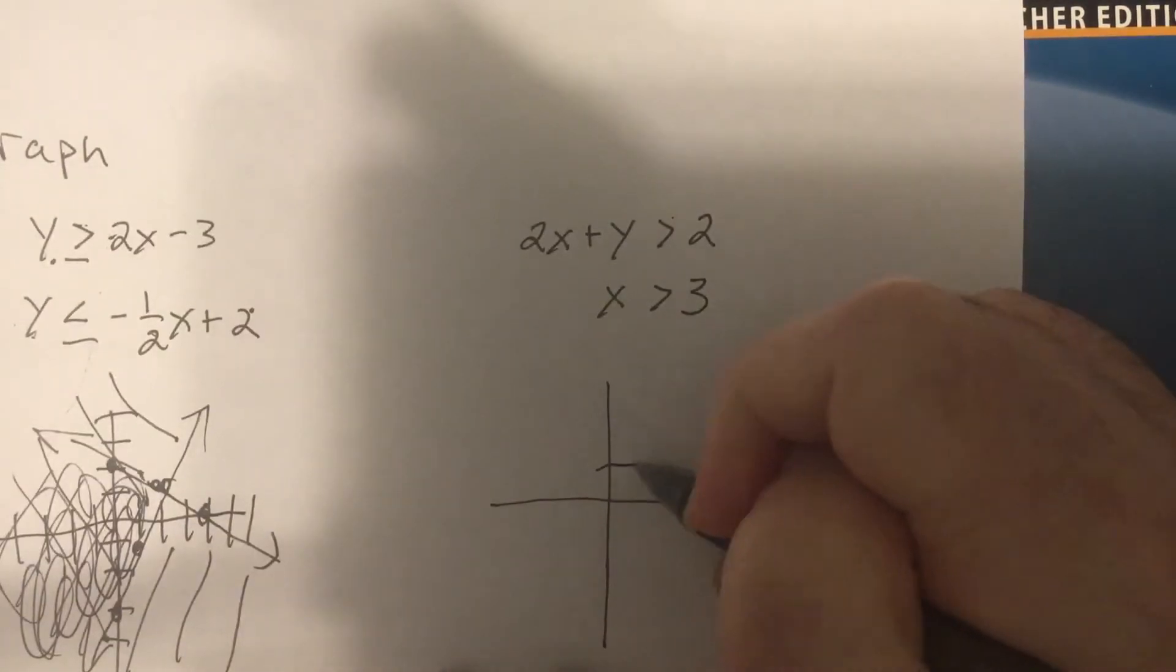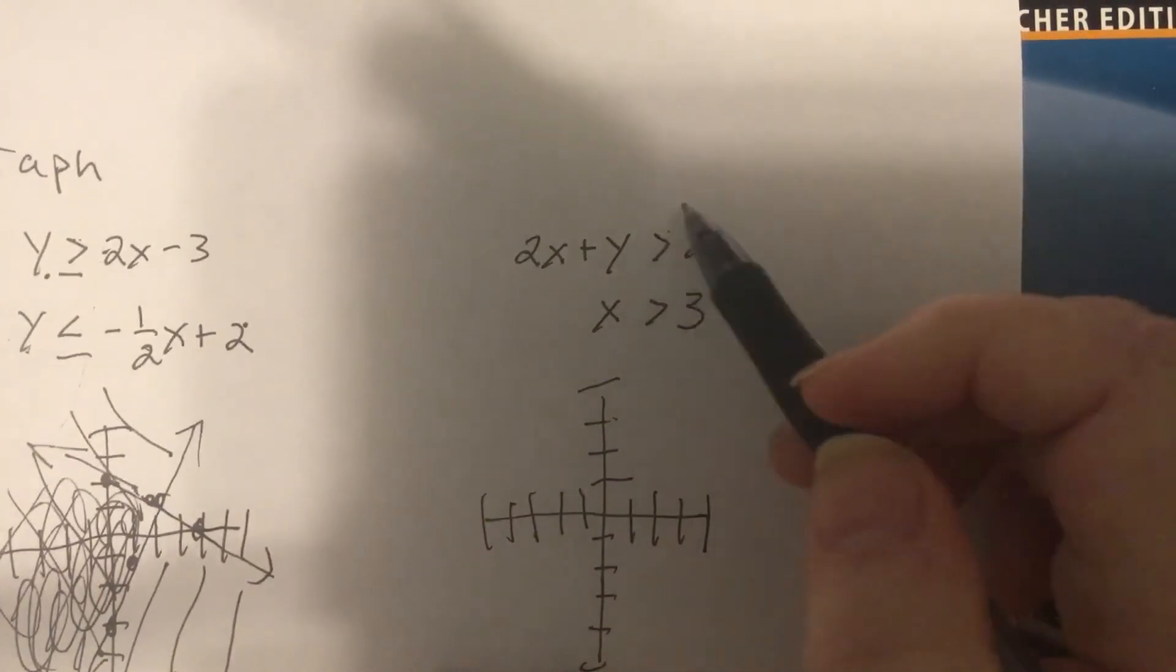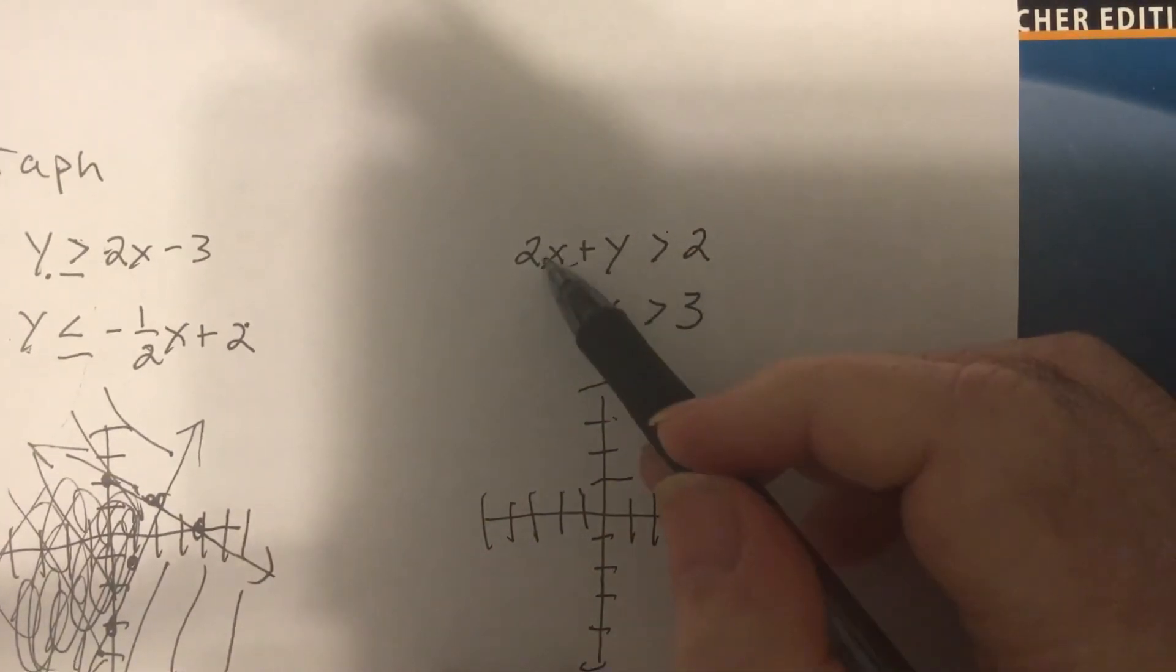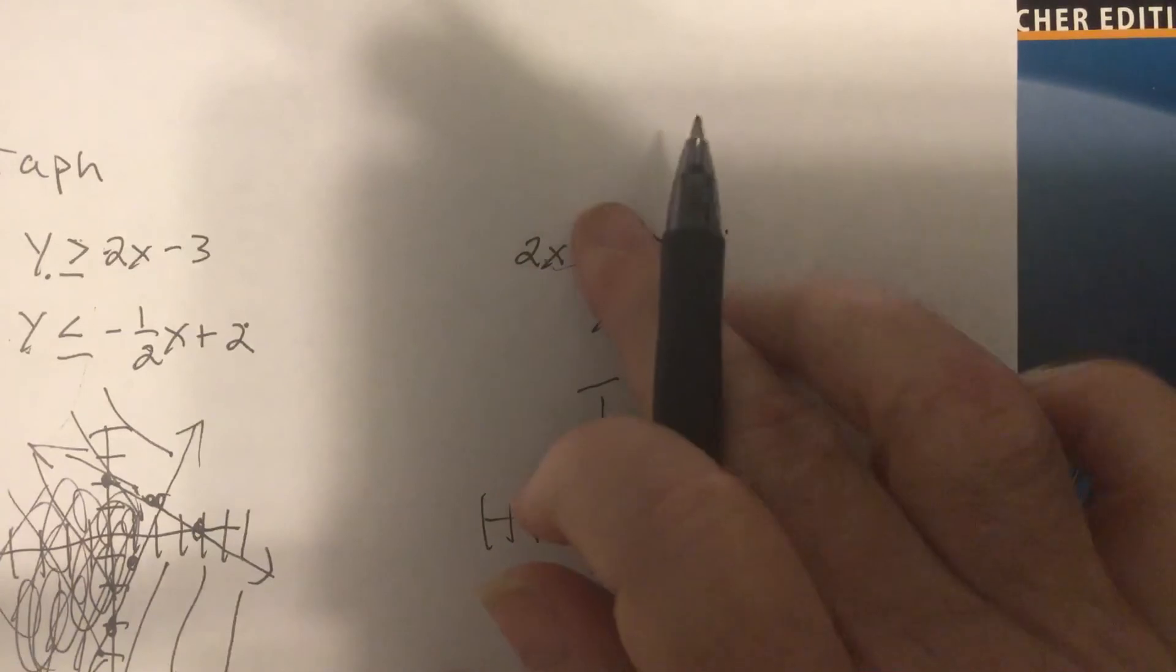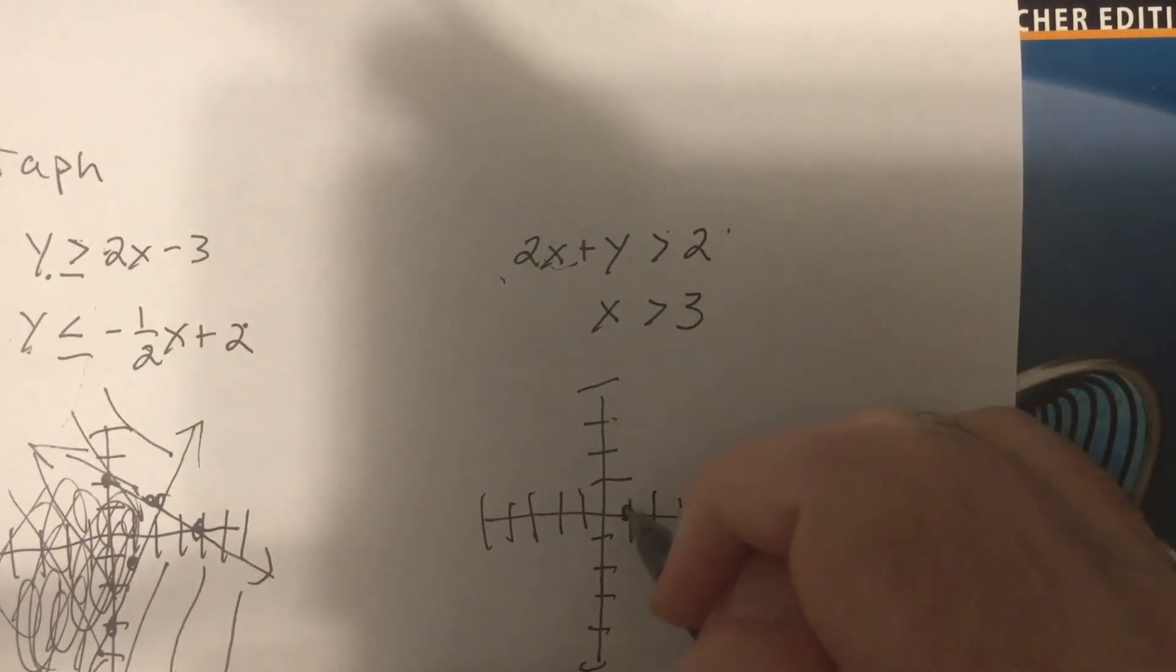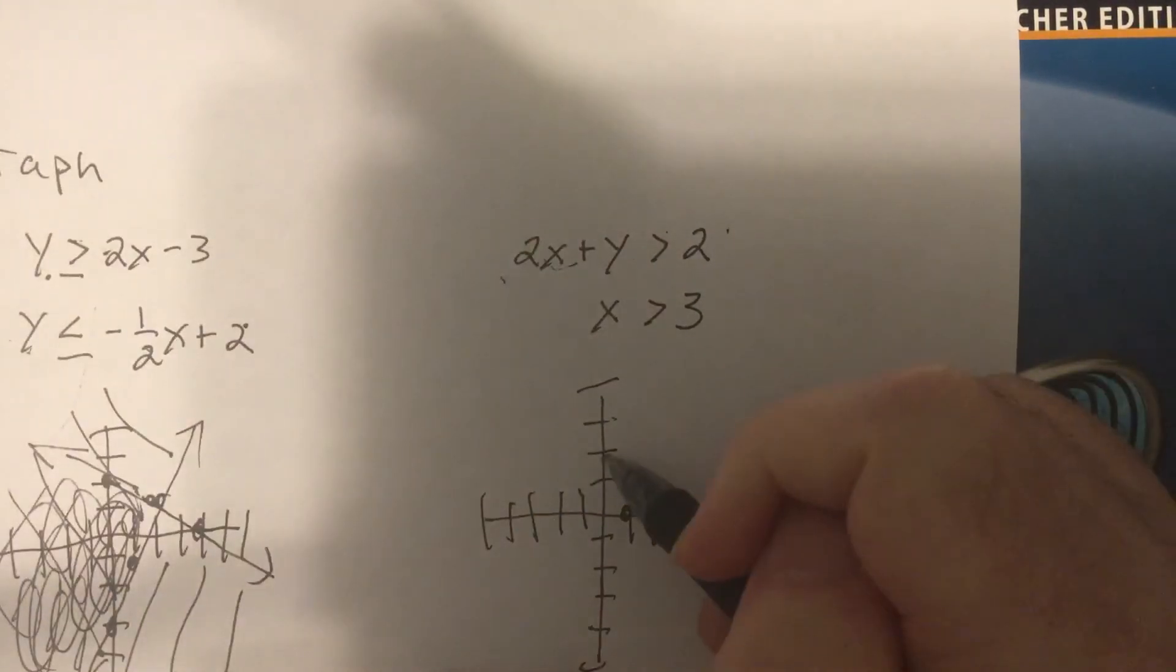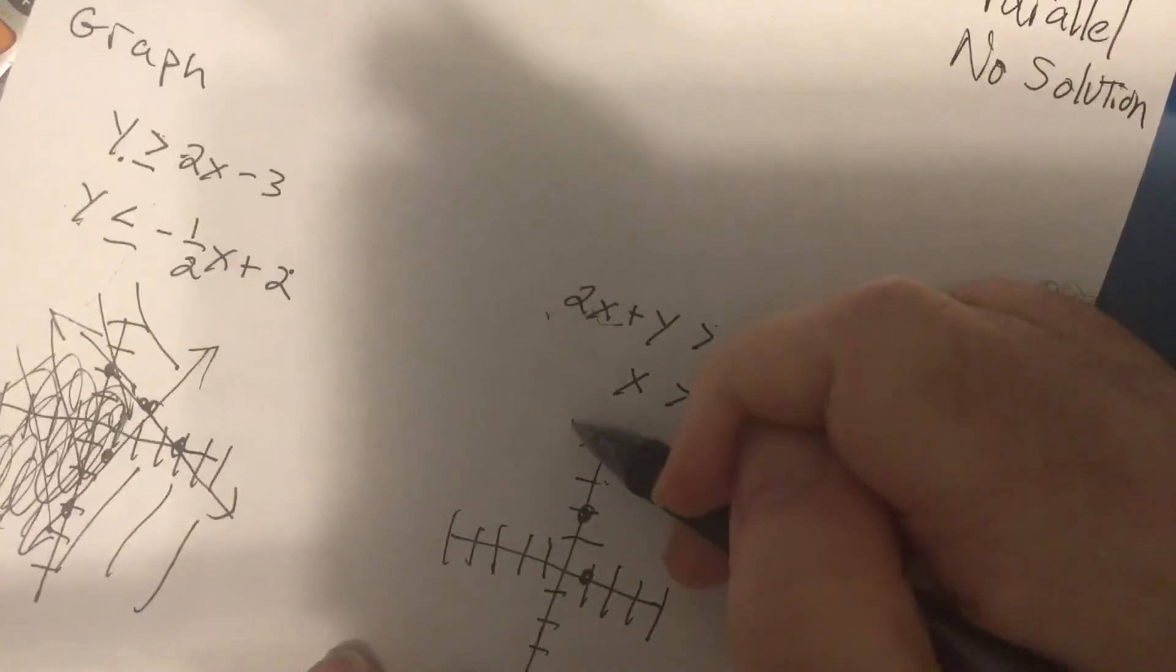Now again, if it just says graph, you can choose the way you want to graph it. So I'm going to use x and y intercept. The x intercept, cover up the y, 2 times 1 is 2, so that'd be 1. And then cover up the x for the y intercept, that'd be y is 2. And it's dashed.